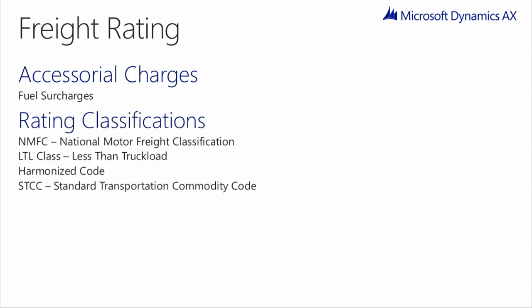Common rating classifications utilized in Transportation Management in AX are as follows. First, the NMFC code, which stands for National Motor Freight Classification Code, and is what determines how the item is rated for certain carriers. It is also important to be specified for the bill of lading. Next, the LTL class refers to the NMFC code, and it is a category of your LTL freight. The freight class determines the carrier's shipping charges by identifying the size, value, and difficulty of transporting your LTL freight.